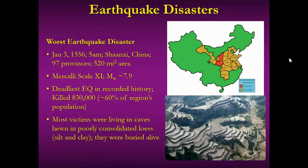The worst earthquake disaster ever — the deadliest — occurred in 1556 in Shaanxi, China. It occurred about five in the morning, so most people were in their homes. It occurred over an area of 520 square miles in 97 provinces and was a 7.9 magnitude earthquake. They didn't have seismometers back then, but matching it to the Mercalli scale gives a rating of 11 — very, very damaging. It ended up killing 830,000 people, about 60% of the population of that region.